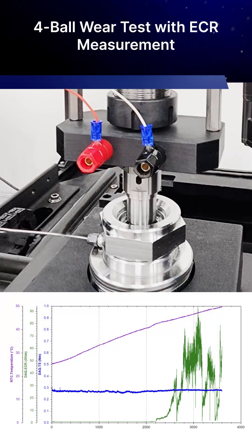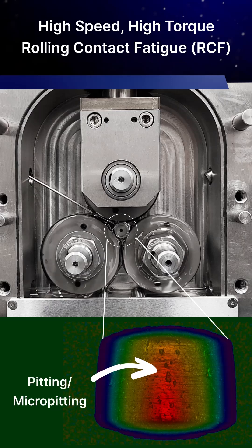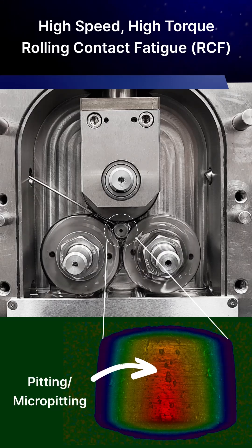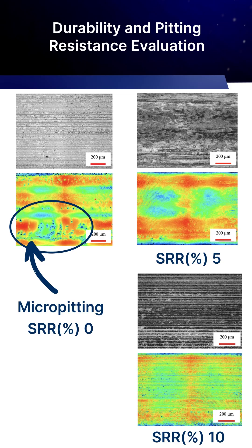This invaluable data reveals how materials, lubricants, and EV components interact under arcing and non-arcing conditions, providing functional tribological insights that enhance performance, increase efficiency, and extend the lifespan of electric vehicle parts.